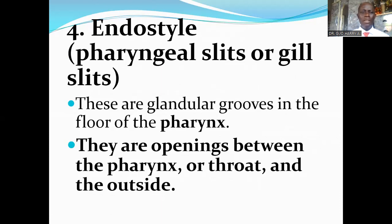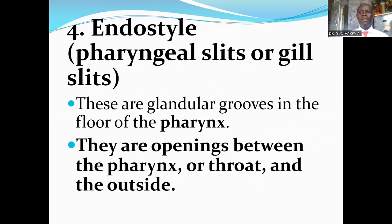The fourth distinctive feature of chordates is that they also possess an endostyle or pharyngeal slits or gill slits. The pharyngeal slits or gill slits are common to chordates and not found in other groups of organisms. The pharyngeal slits are glandular grooves in the floor of the pharynx. They are openings between the pharynx or throat and the outside. In terrestrial vertebrates, the slits do not actually connect to the outside and are termed pharyngeal pouches. The pharyngeal pouches are present in the embryos of all vertebrates, including humans.